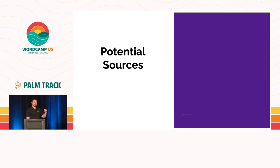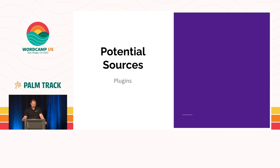So those are the categorizations — the general categories of issue types. Now we're going to look at the potential sources of these. Some of these might be a little similar, but they're definitely different, and they're listed in order of likelihood that they are your problem.